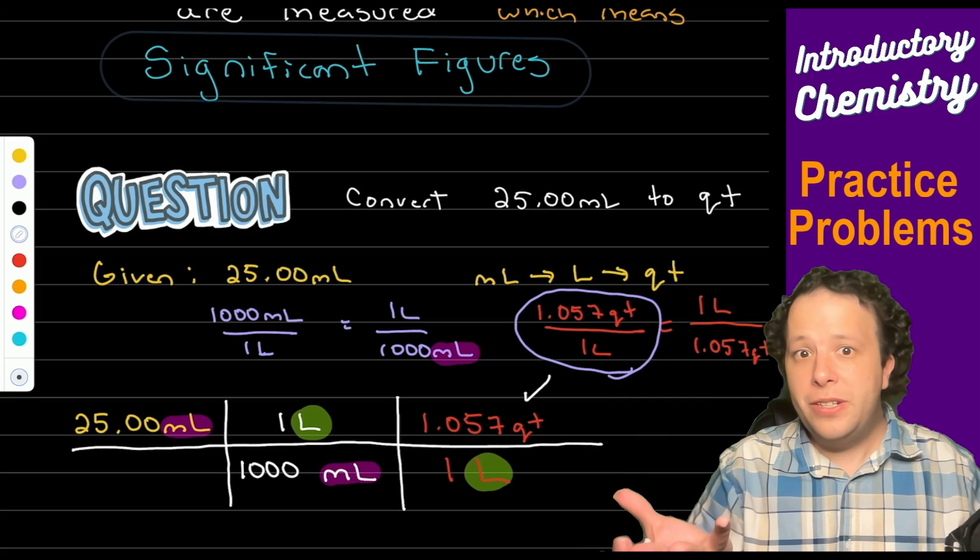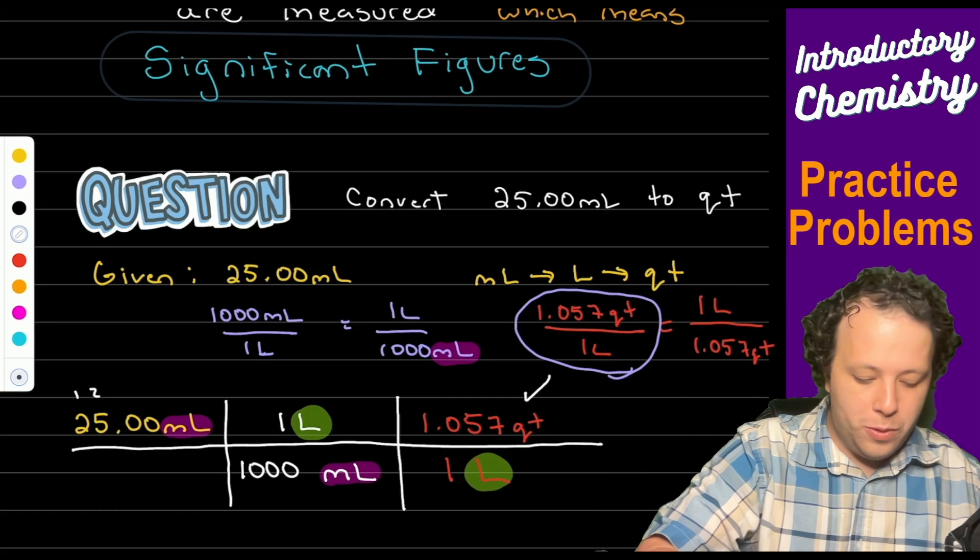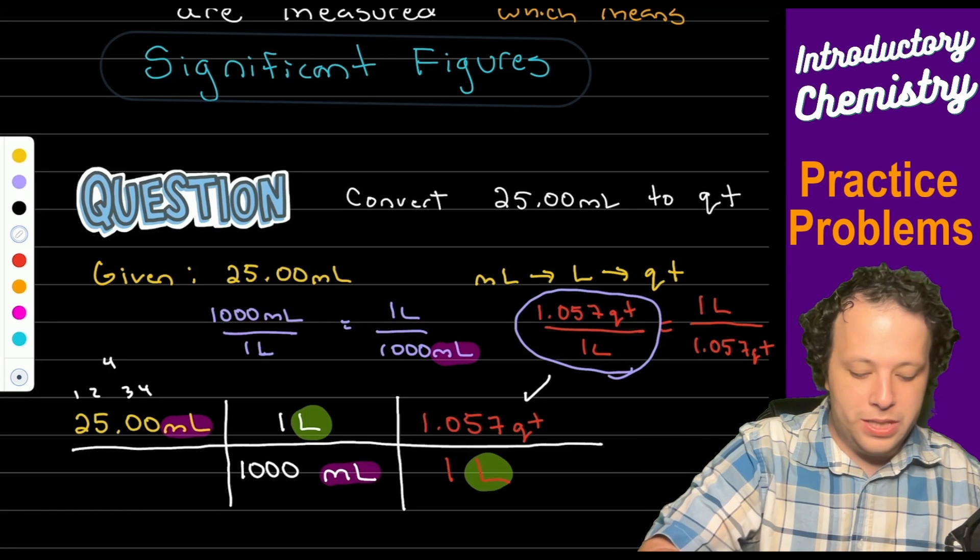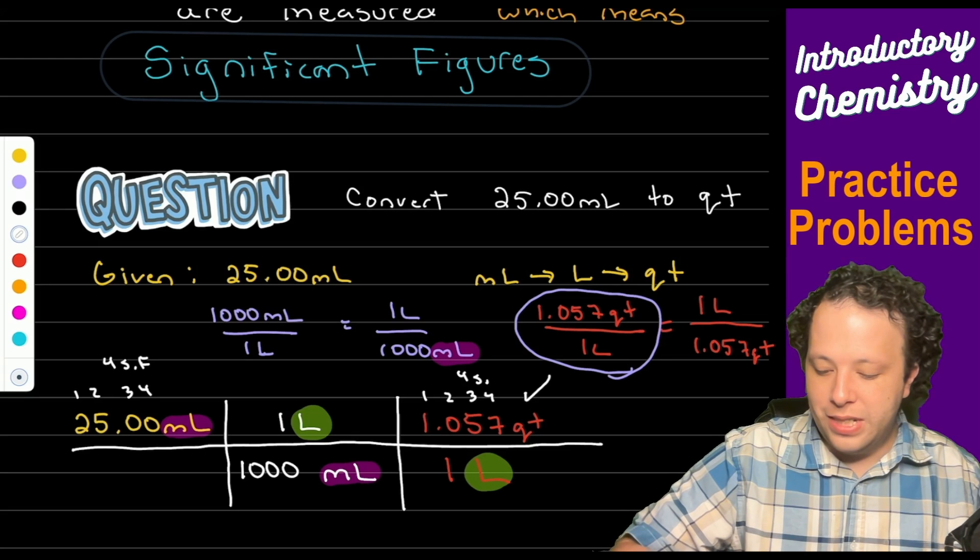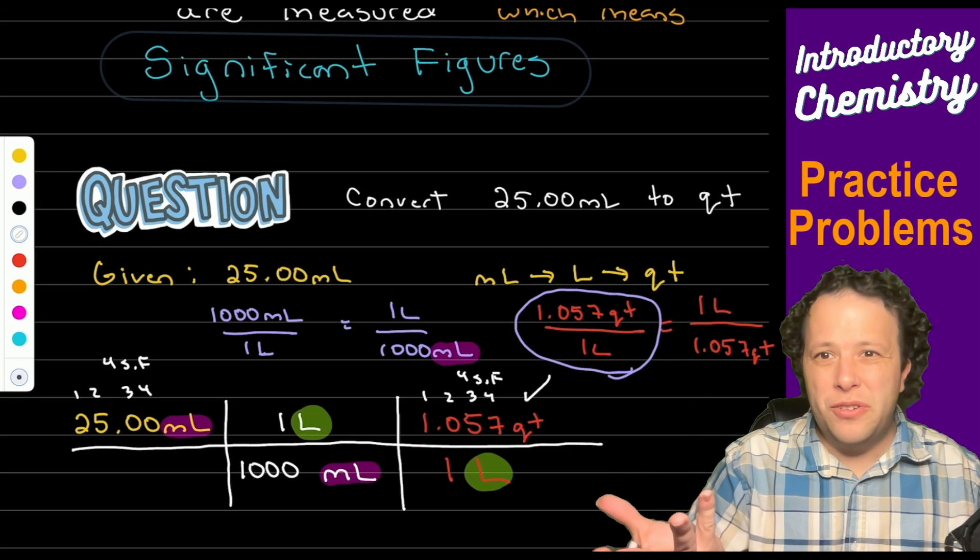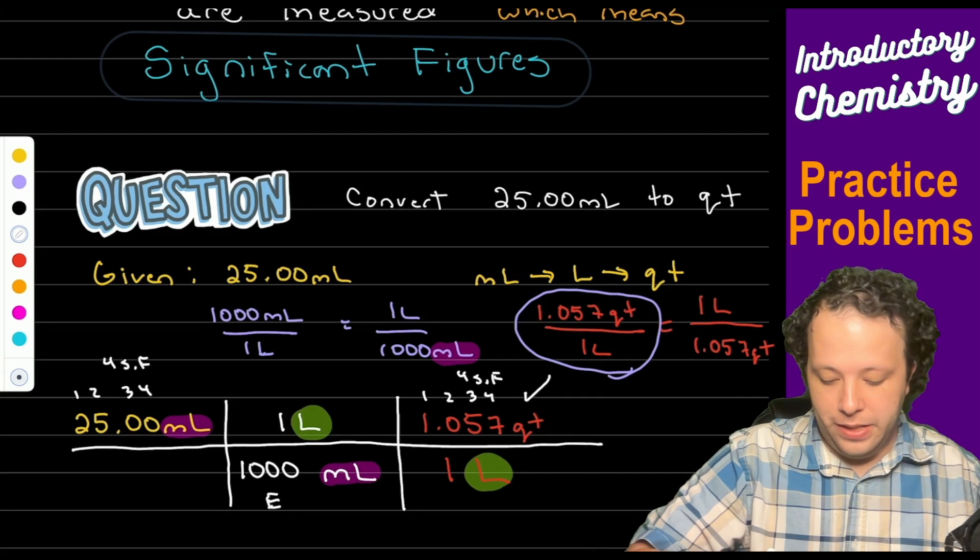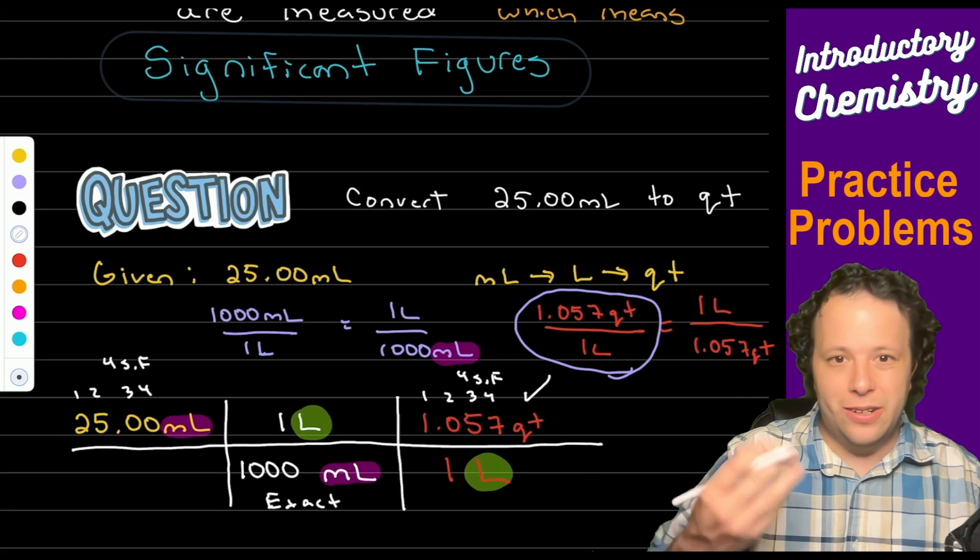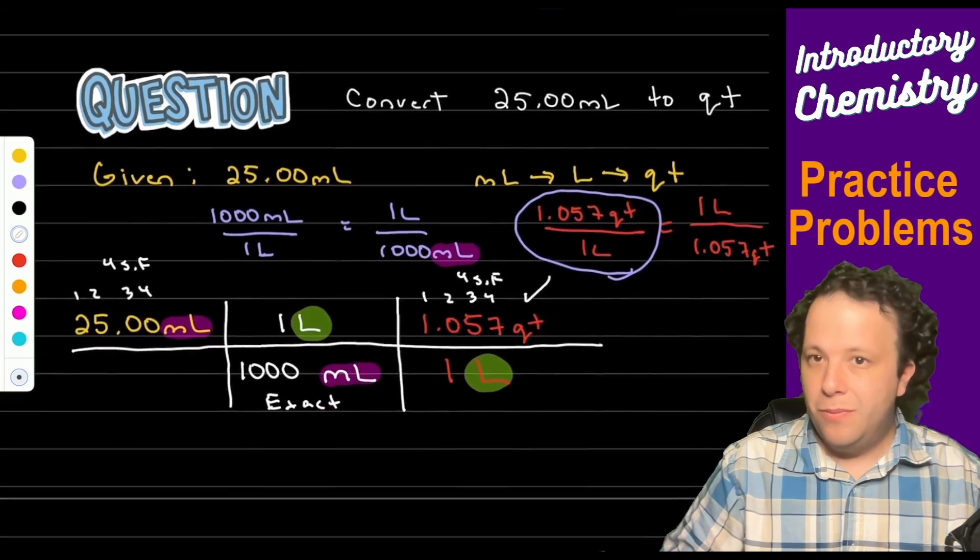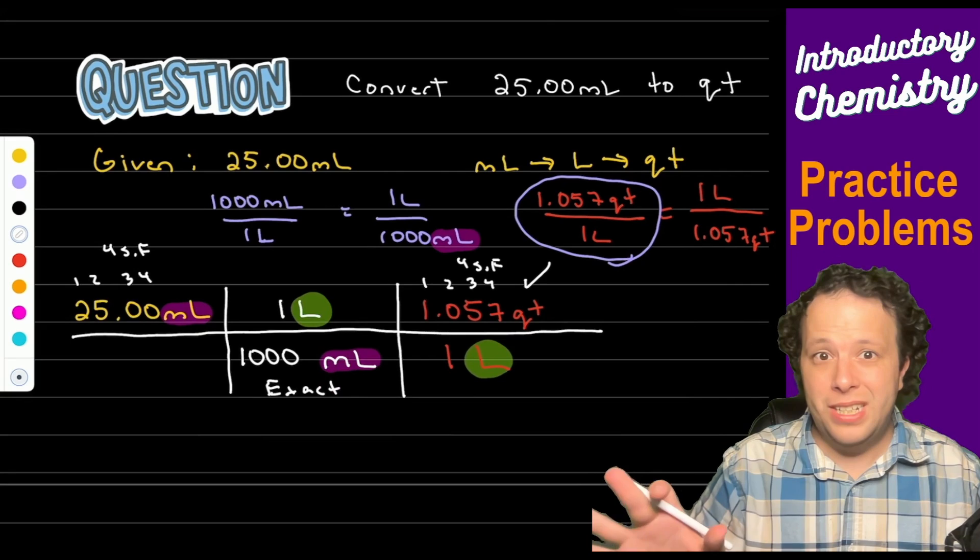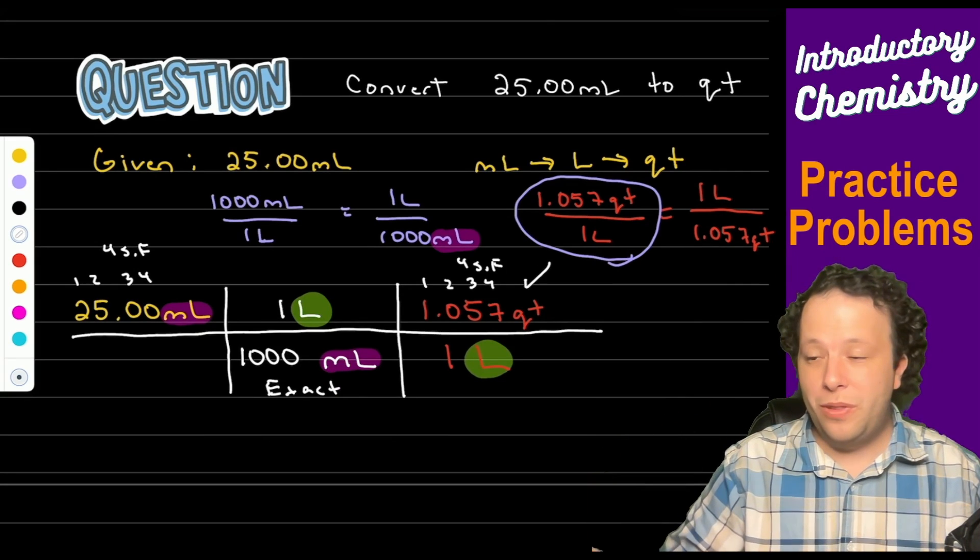Now earlier I mentioned sig figs. Our first number we have 1, 2, 3, 4 sig figs and then on our quart number we have four sig figs. Now whenever we have a metric conversion to metric they're exact, you do not have to worry about it. So with one liter to milliliters it does not affect our calculation. So we just have to make sure we round to four sig figs for this particular problem.